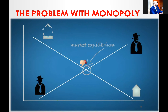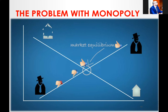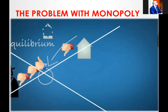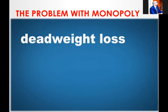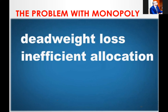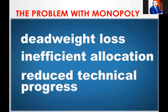A monopoly can reach its profit maximum at different points, but for economic welfare the market equilibrium is the only destination and all other outcomes should be prevented. A monopoly leads to dead weight loss, inefficient allocation, and reduced technical progress.